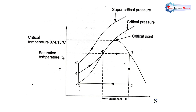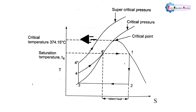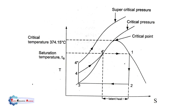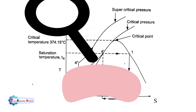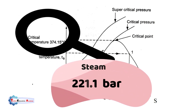Here you can see that these are all constant pressure lines, and the horizontal dotted line represents constant temperature. When water at saturation temperature is heated further at constant pressure, additional heat is supplied at constant temperature which changes the phase from liquid to vapor — this heat is known as latent heat of vaporization or hidden heat. The critical point is where there is no change of phase or separation of phases. The temperature at this point is called critical temperature and the pressure is called critical pressure.